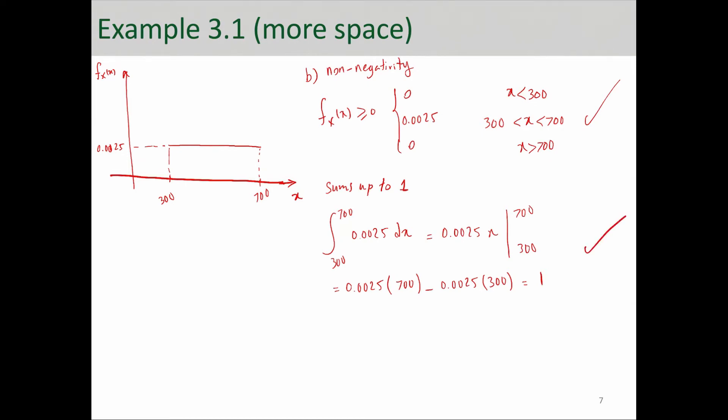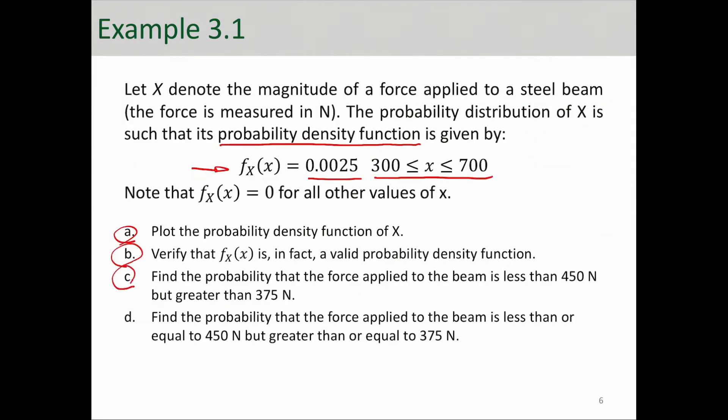So, we can say that since both validity conditions are passed, the PDF is valid. Alright. So, that's how you check the validity of a PDF. Part C, find the probability that the force applied to the beam is less than 450 and greater than 375.